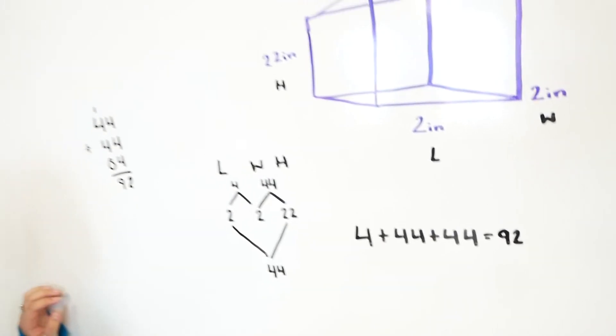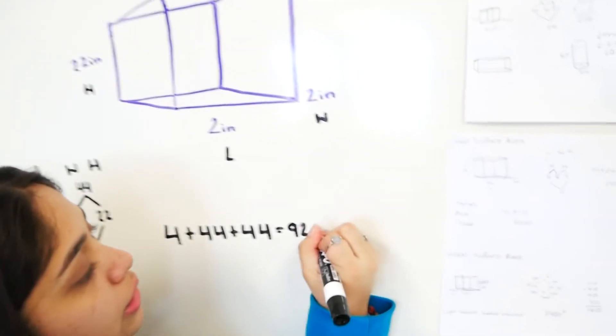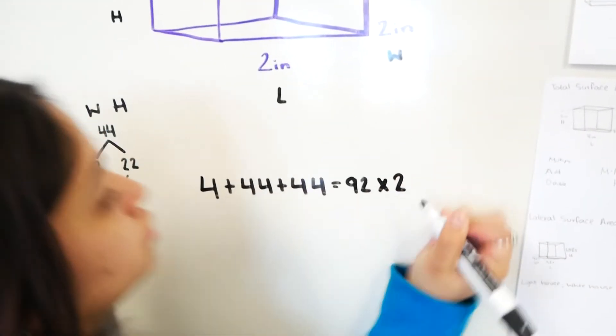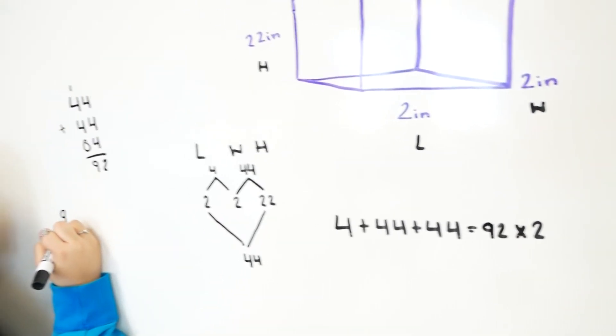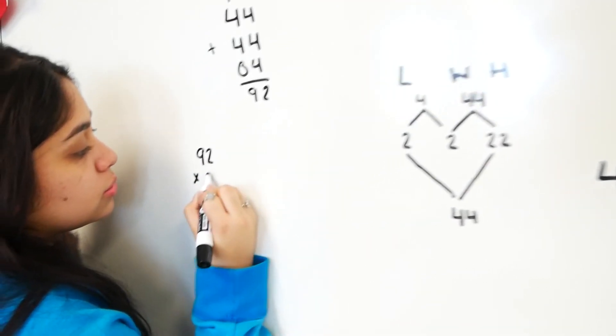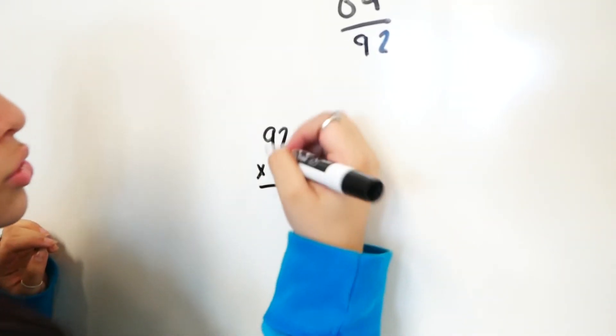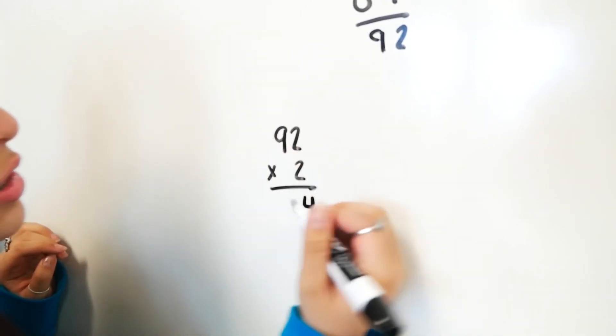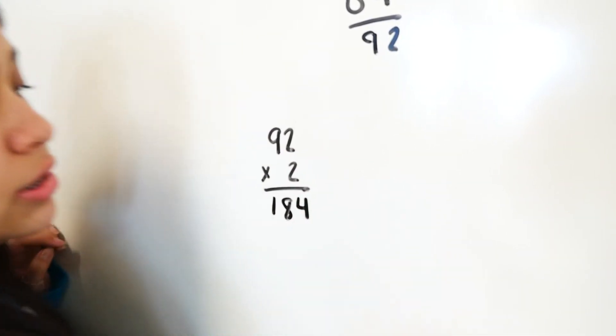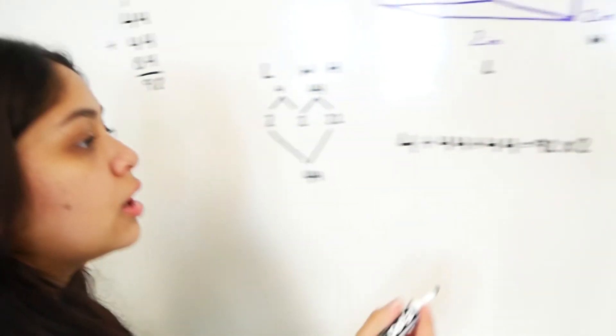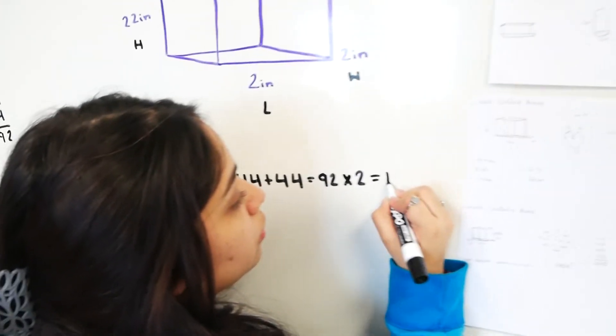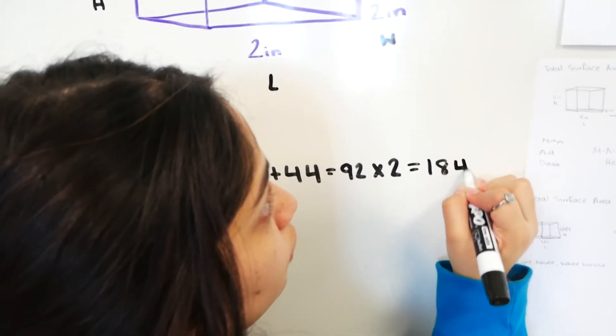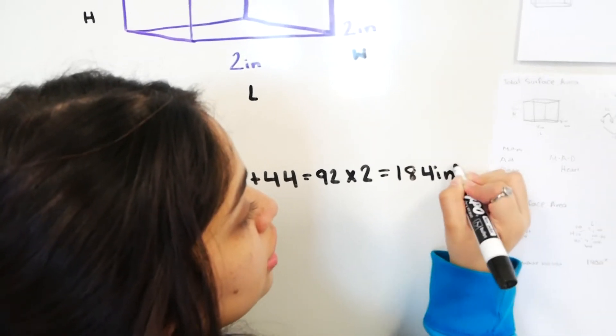And this is where you get your double times 2. 92 times 2. 2 times 2 is 4. And 9 times 2 is 18. You get 184.